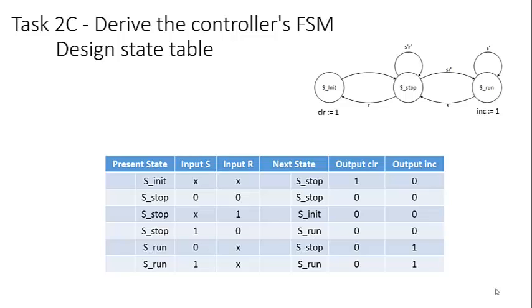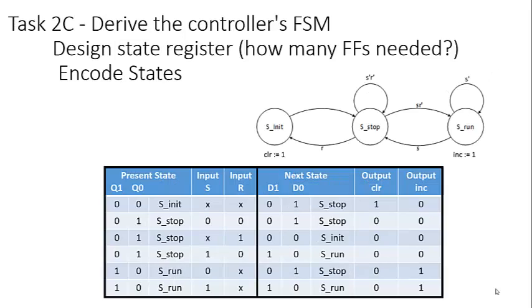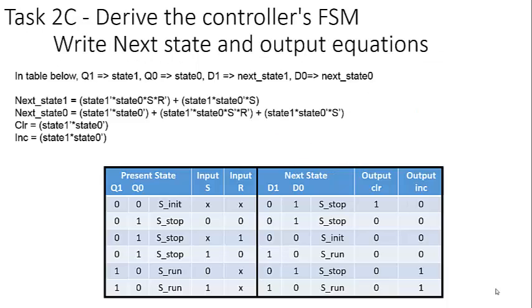Taking our finite state machine defined in the previous slide, we have it shown here, and we can make a state table just getting our information directly from our finite state machine or controller design shown in the upper right. I've basically recopied that into table format. Once we have that, that was the first step of designing our finite state machine. The second step is to determine how many flip-flops we need. Three states indicates that we need two flip-flops, and likewise, we can then encode. I've chosen to encode in binary. S_init was encoded as 00, S_stop was encoded as 01, and S_run was encoded as 10.